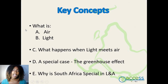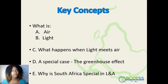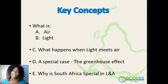In this talk I will define and explain what air is and what light is. I will also look at what happens when light and air meet by looking at how the sky is blue. All of this will be discussed in order to explain the greenhouse effect. I will end things off with why South Africa is a special place with regards to light and air.